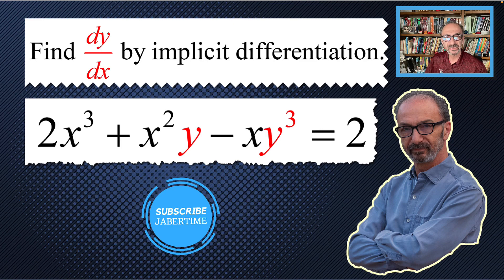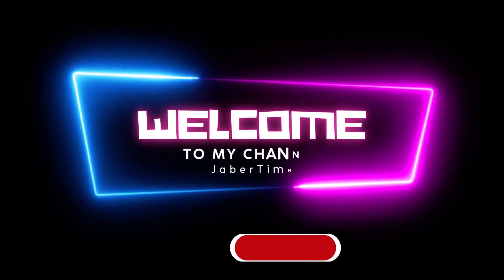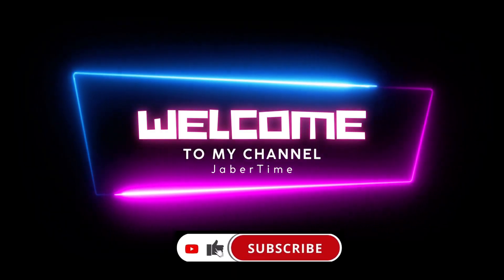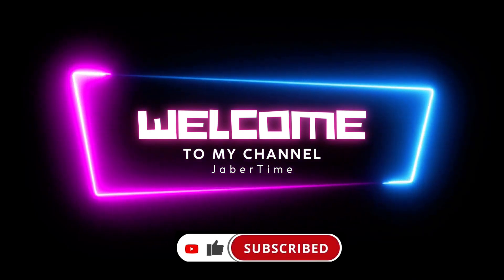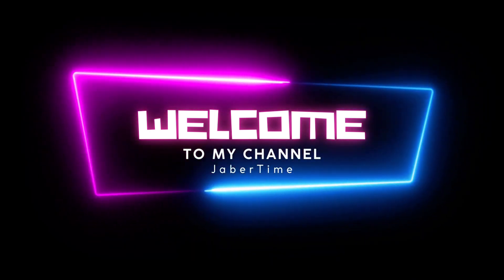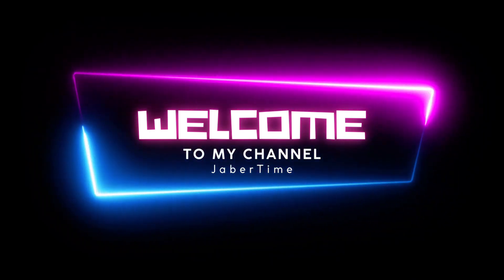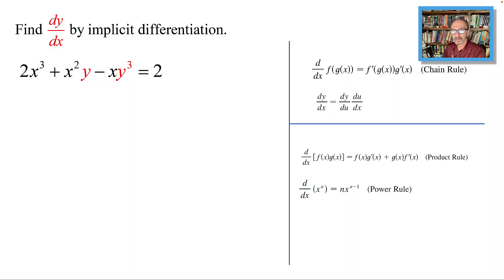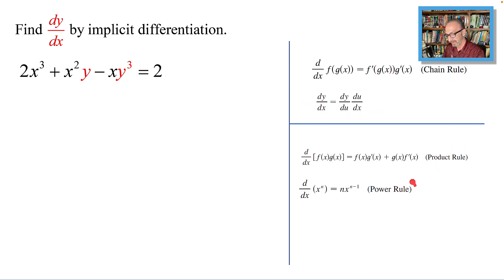Find dy/dx by implicit differentiation: 2x³ + x²y - xy³ = 2. Let's get started. We'll be using the chain rule, the product rule, and the power rule.